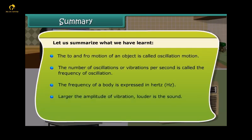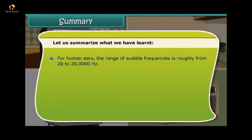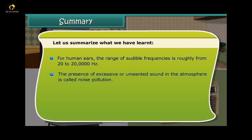Larger the amplitude of vibration, louder is the sound. Higher the frequency of vibration, the higher is the pitch or shrill is the sound. For human ears, the range of audible frequencies is roughly from 20 to 20,000 hertz. The presence of excessive or unwanted sound in the atmosphere is called noise pollution.